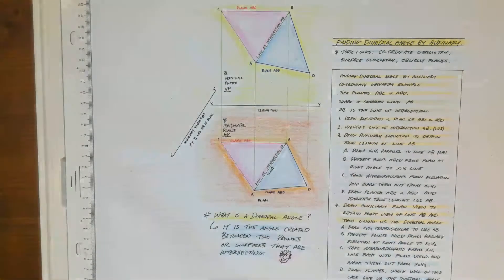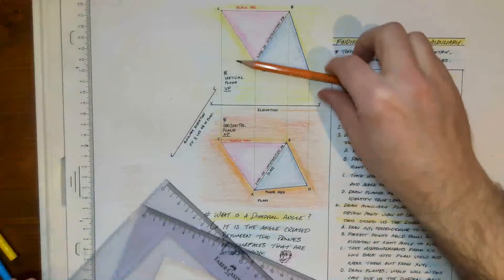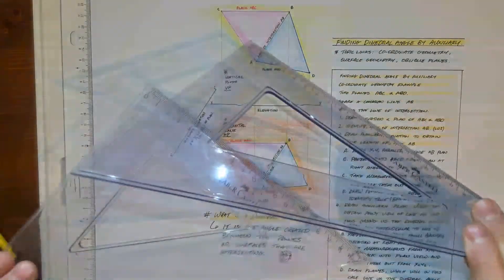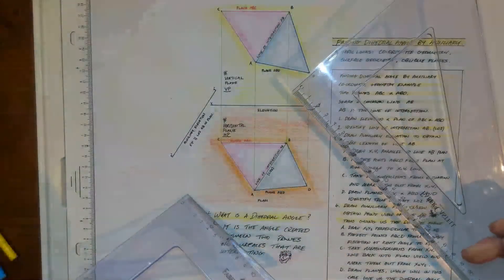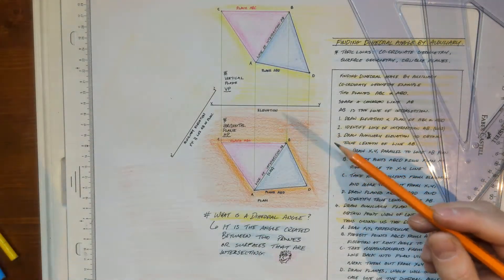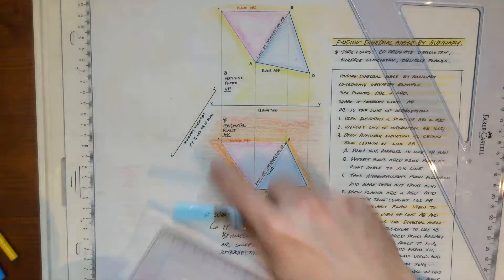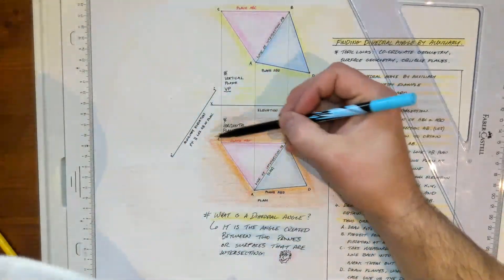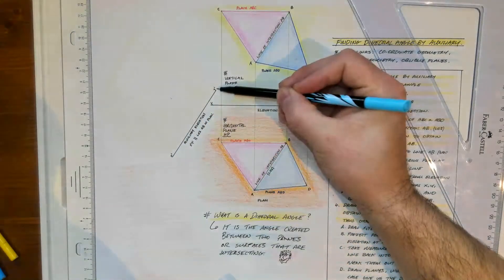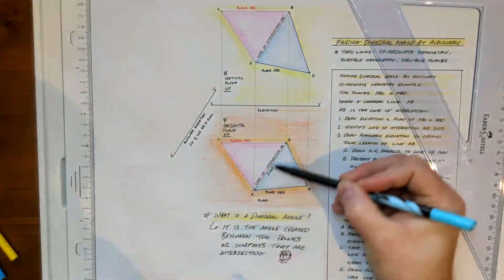Once we get the true length of the line of intersection, we can then proceed to find the dihedral angle. I'll get my equipment — always keep the pencil sharp and equipment clean. I'm going to draw these lines in with a colored pen so you can see them clearly. I have the x1y1 set up, and the crucial point is that for an auxiliary elevation, the x1y1 line is parallel to the line of intersection in the plan view.